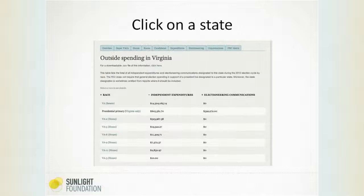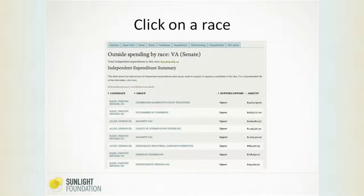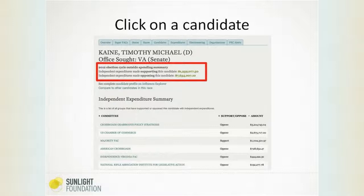So let's click on a state and look at what we get. I'm picking Virginia because I live in Virginia. As you can see, you've got the Virginia Senate race and how much has been spent, the presidential primary, and the different house races where there's outside spending. Let's choose a race to look at — we'll click on the Virginia Senate because that's what has the most money. What we get is a summary of what each group is spending in the race. We've got Crossroads Grassroots Policy — that's Crossroads GPS, the Karl Rove group — at the top, then the US Chamber of Commerce, and the Majority PAC going against George Allen.